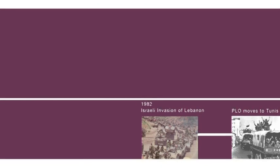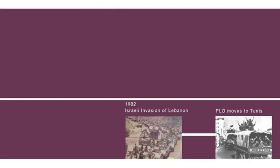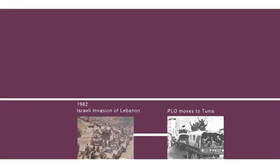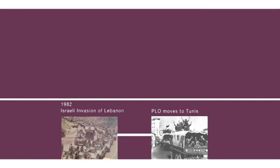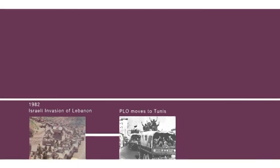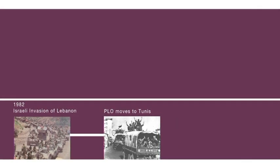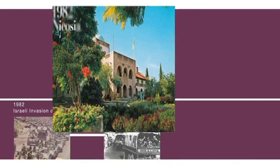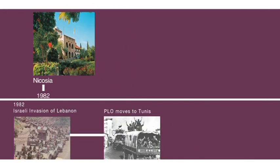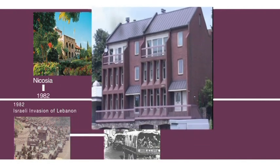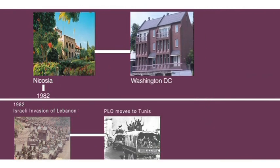The 1982 invasion of Lebanon was a major challenge for IPS. The institute remained steadfast in Beirut, but with many of its researchers leaving Lebanon, it had to find new strategies to adapt. The institute opened a small liaison and coordination office in Nicosia and relocated many of its functions to Washington, D.C.